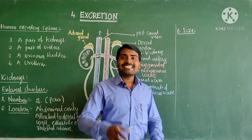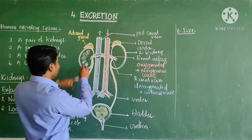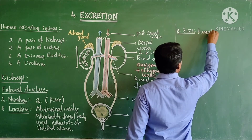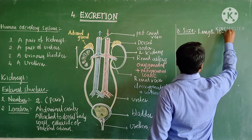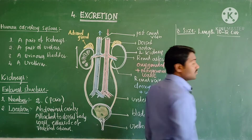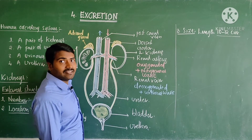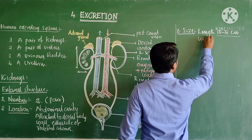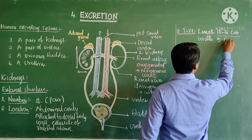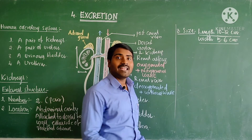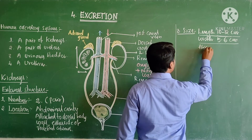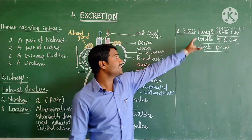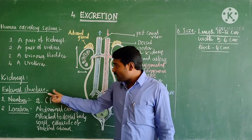Let us talk about size. Each kidney is nearly 10 to 12 centimeters in length. If we talk about their width, it is nearly 5 to 6 centimeters, and the thickness is nearly 4 centimeters.